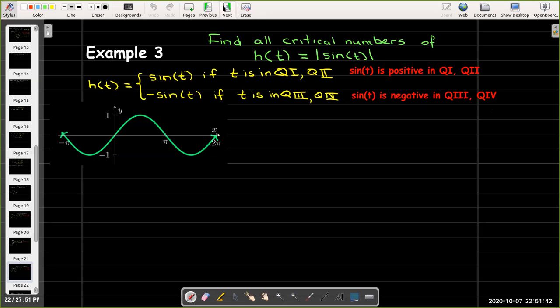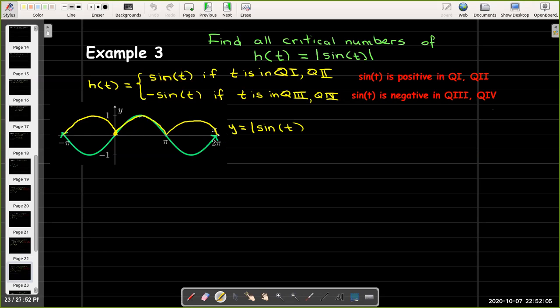All right, so let's look at what the graph would be. Any part of the graph which has negative y coordinates, that is, any part of the graph which is below the x-axis is going to get reflected in the x-axis and now be above the x-axis. So this yellow line now is my graph of y equals the absolute value of sine of t.